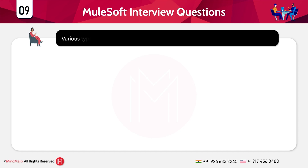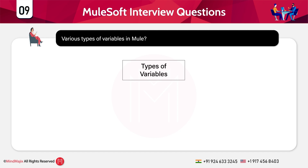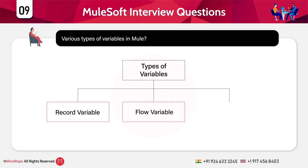What are the various types of variables used in Mule ESB? There are three types of variables in Mule: record variable, flow variable, and session variable.